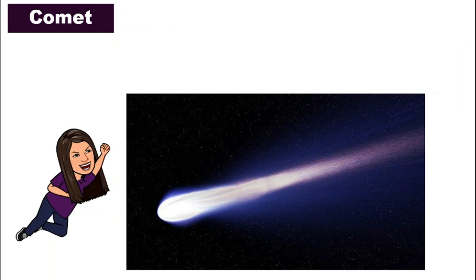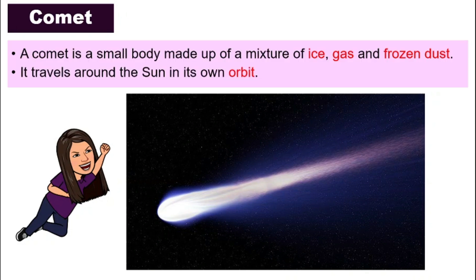Next, let's look at comets. Among the three, comets are really beautiful. A comet is a small body made up of a mixture of ice, gas, and frozen dust — basically, it is a frozen ball. It also has its own orbit and travels around the sun, just like asteroids, but the content is very different. It is not rock or metal like an asteroid, but ice, gas, and frozen dust.